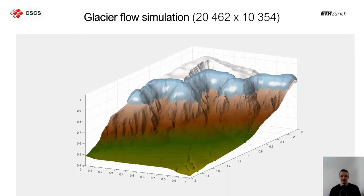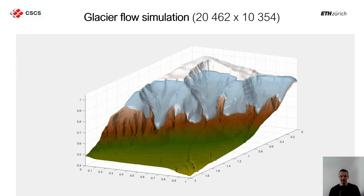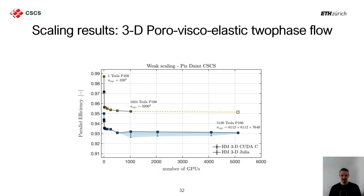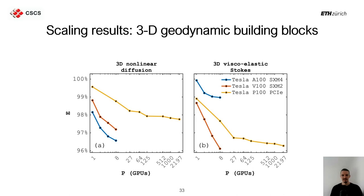Here is how the glacier simulation looks when run at high resolution on multiple GPUs. Regarding scaling results: the parallel efficiency of the Julia 3D poro-viscoelastic two-phase flow solver is shown in yellow and a reference solver in blue. Running up to 1024 GPUs with Julia, we get more than 95% parallel efficiency, thanks in large part to the communication/computation overlap feature. We achieved over 96% parallel efficiency for a 3D nonlinear diffusion solver and a 3D viscoelastic Stokes solver when tested on more than 2000 GPUs.